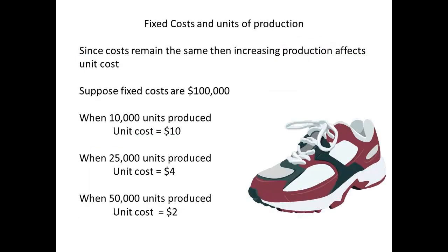Although the fixed costs may remain the same, it means that the more units that are produced, the more units that share the fixed costs. If fixed costs are $100,000 and shared between 10,000 units, then the cost per unit is $10. If production increases to 25,000 units, this falls to $4, and at 50,000 units, the cost is only $2 per unit.